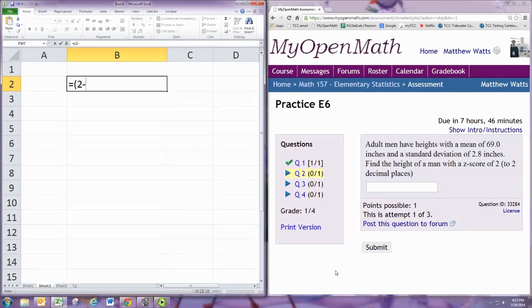Oh, this is going backwards. Sorry. Find the height of a man with a z-score of 2. Okay, so we need to use the inverted formula.